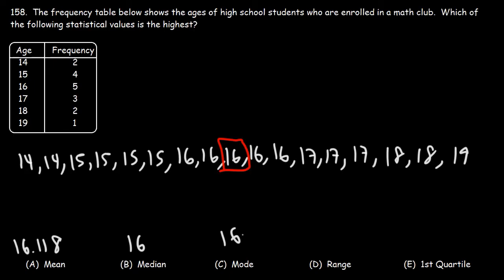The range is the difference between the highest number and the lowest number. The highest number is 19. The lowest number is 14. So the range is going to be 19 minus 14, which is 5.